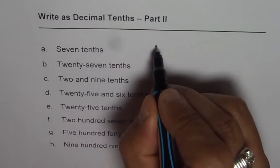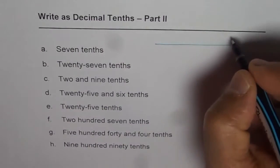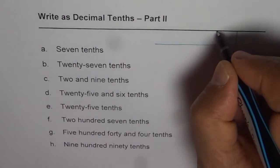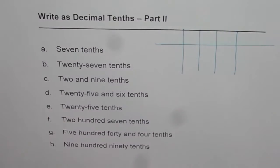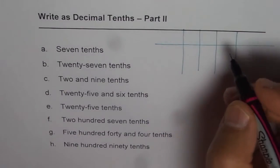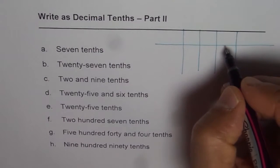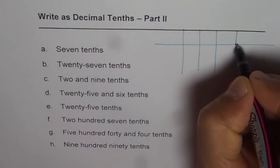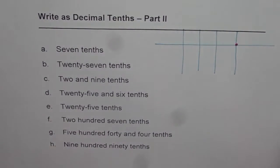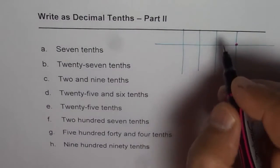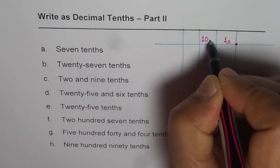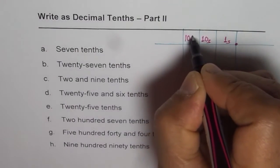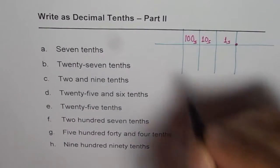On a place value chart, we can have numbers ones, tens, and hundreds on the left side of the decimal. The decimal point is here. Numbers on the left side are ones, then we have tens, and we have hundreds on the left side of decimals.